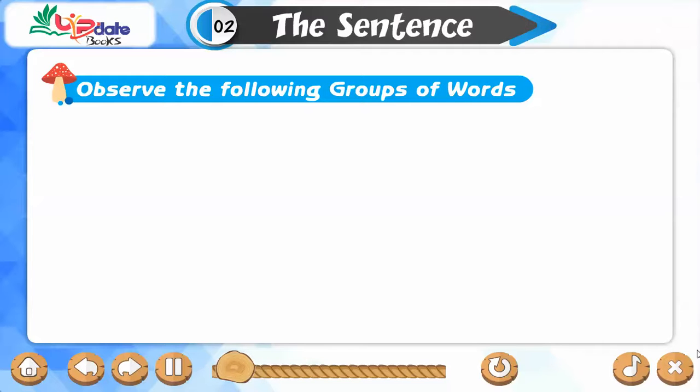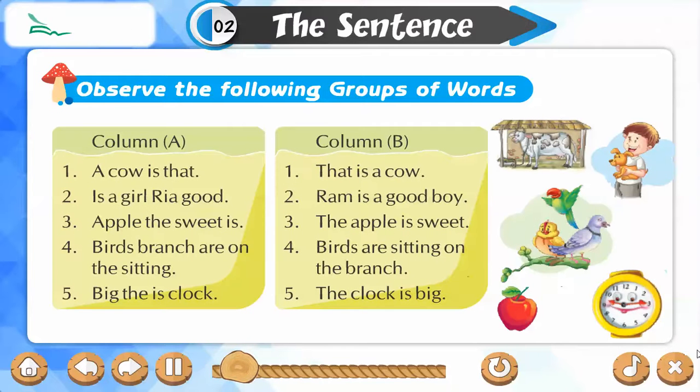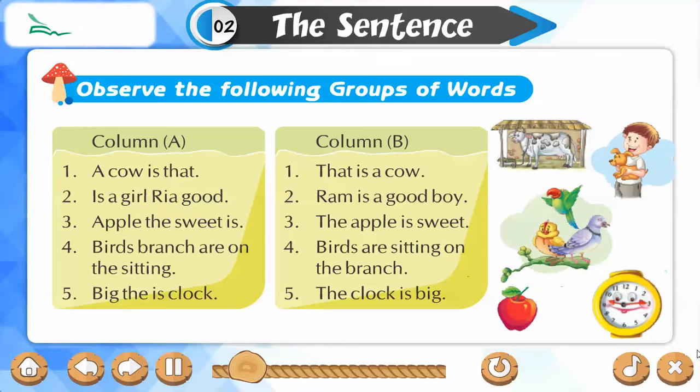Observe the following groups of words. Column A: 1. A cow is that. Column B: 1. That is a cow. 2.